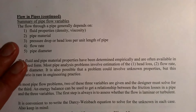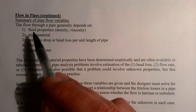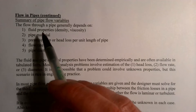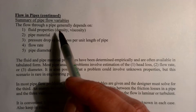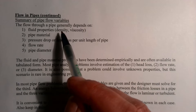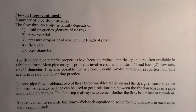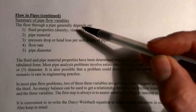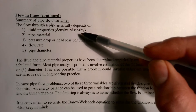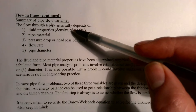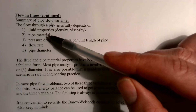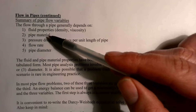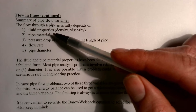Let's look at doing some problems. The different kinds of things we might solve for — I've broken them into five possibilities. The first one is fluid properties like density or viscosity. The Reynolds number is an important consideration, and the friction factor depends on the Reynolds number and also on the roughness height. So it's possible to have problems where you solve for density or viscosity.